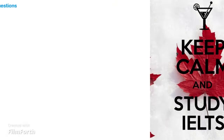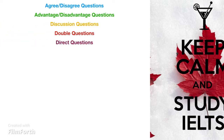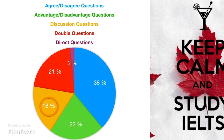First and foremost, there are five types of essay: agree/disagree, advantages/disadvantages, discussion question, double question, and direct question. According to statistics, 38% of questions come from agree or disagree, 22% from advantages and disadvantages, 18% from discussion questions, 21% from double questions, and 2% from direct questions.